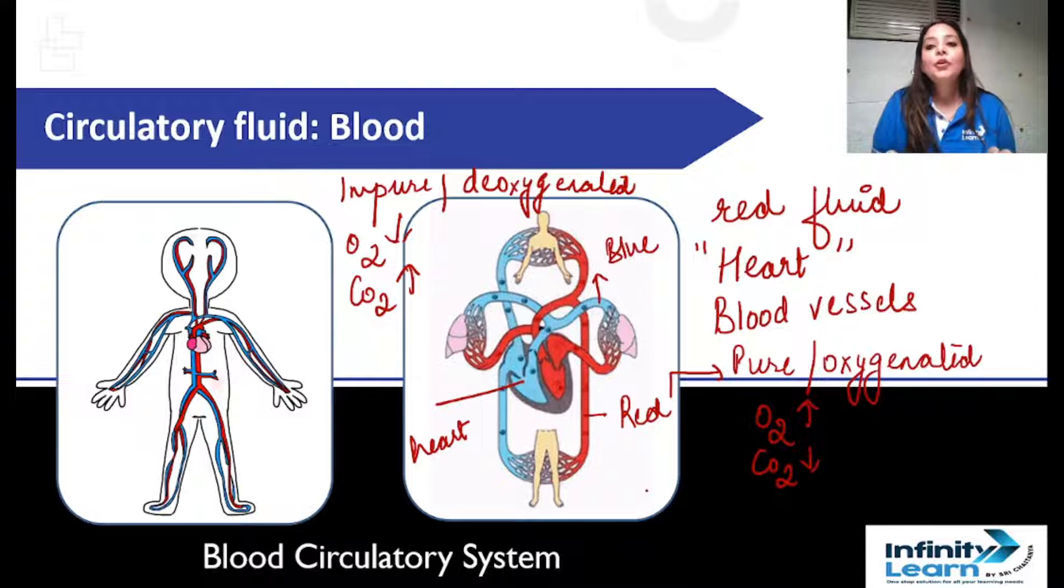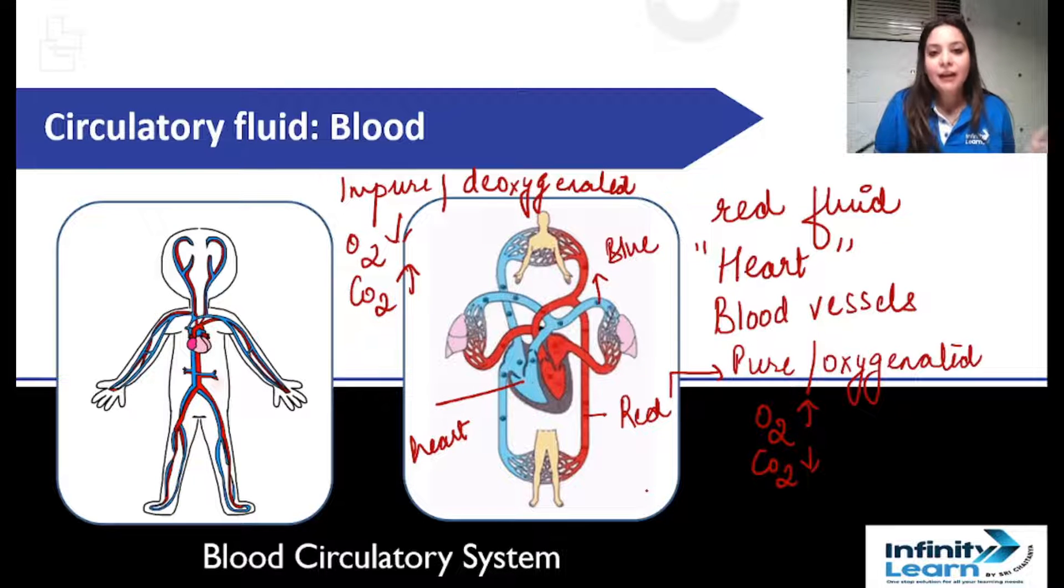So red blood here denotes pure blood or oxygenated blood. What is pure or oxygenated blood? In which the oxygen content is increased and carbon dioxide content is decreased. Same way, this blue is impure or deoxygenated blood, in which oxygen content is decreased and carbon dioxide content is increased.